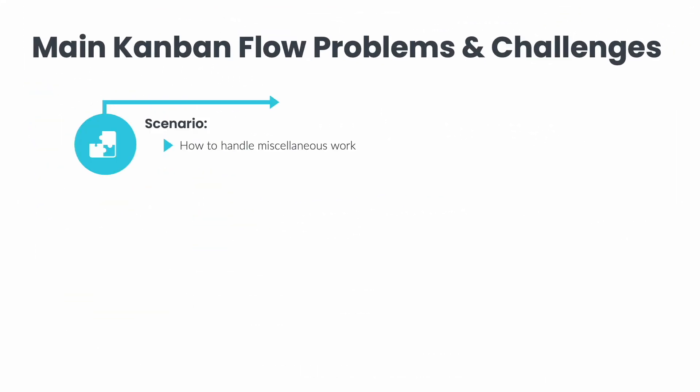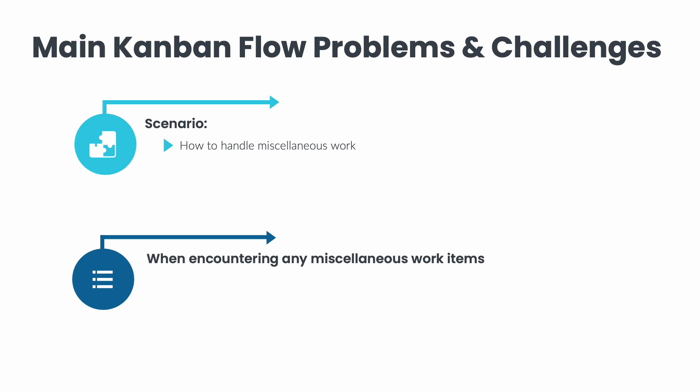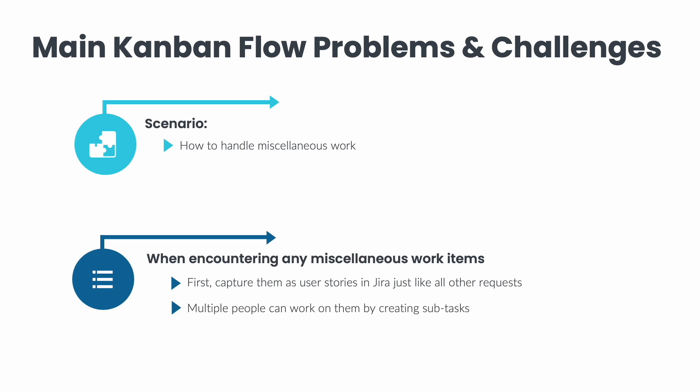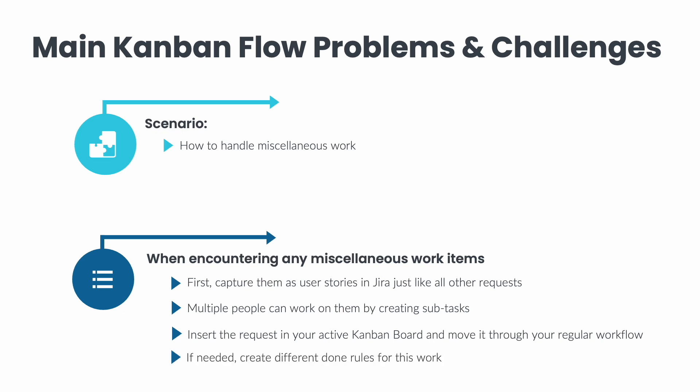Another question teams run into frequently is how to handle miscellaneous work. These work items could be different for each team and company — things like working on an important review, an executive session requiring a demo, or a conference presentation. When encountering any miscellaneous work items, it's important to capture them as user stories in JIRA, just like all other requests. If multiple people need to work on it, you can create subtasks under that user story and assign them to different people. Once defined and documented, insert the request in your active Kanban board and move it through your regular workflow. Be flexible and, if needed, create and define separate done rules for this type of work.